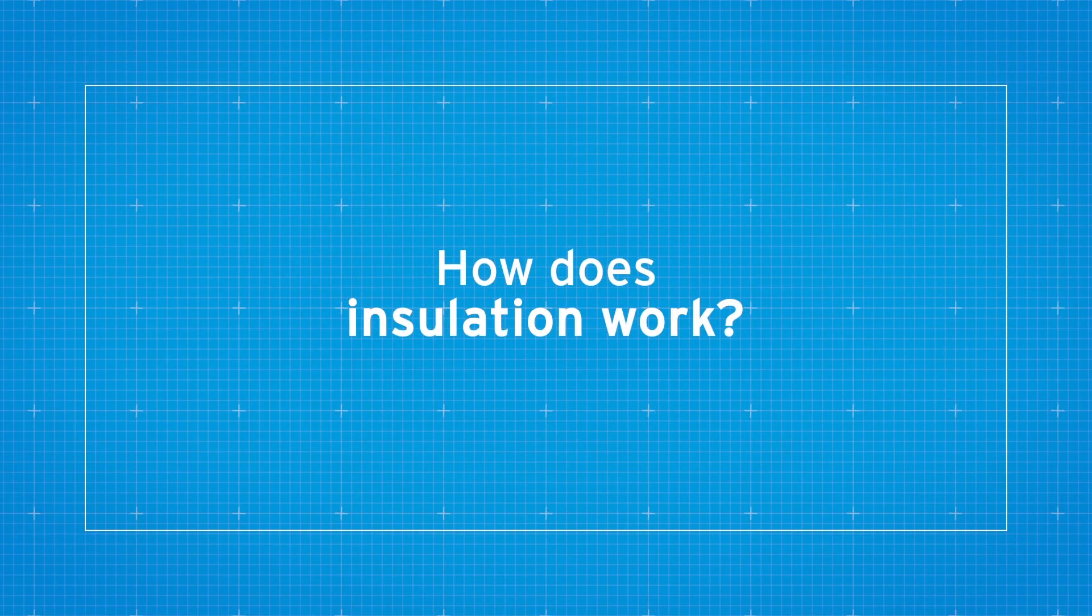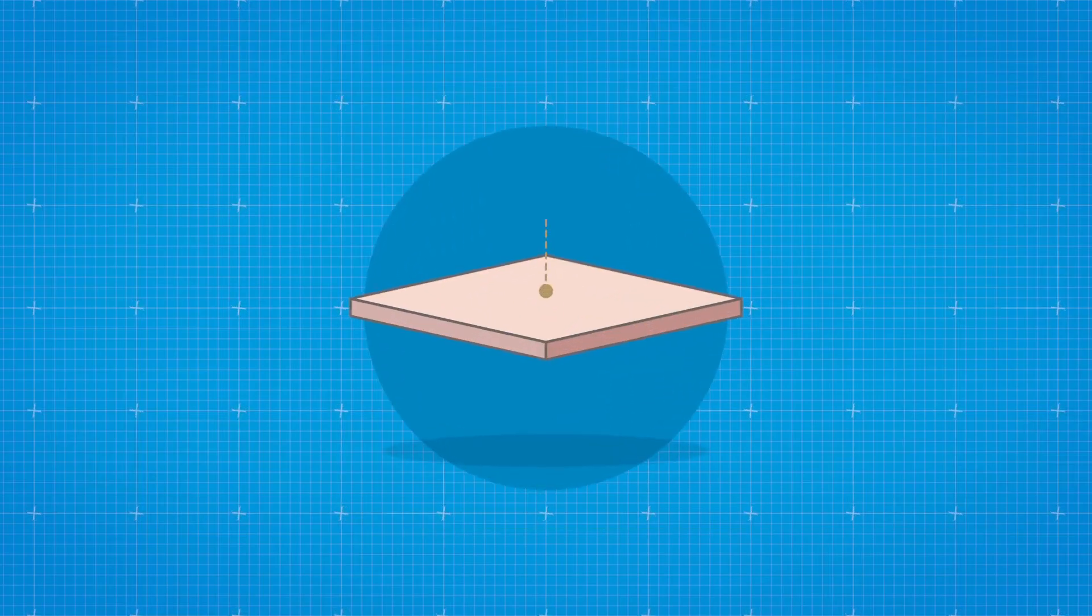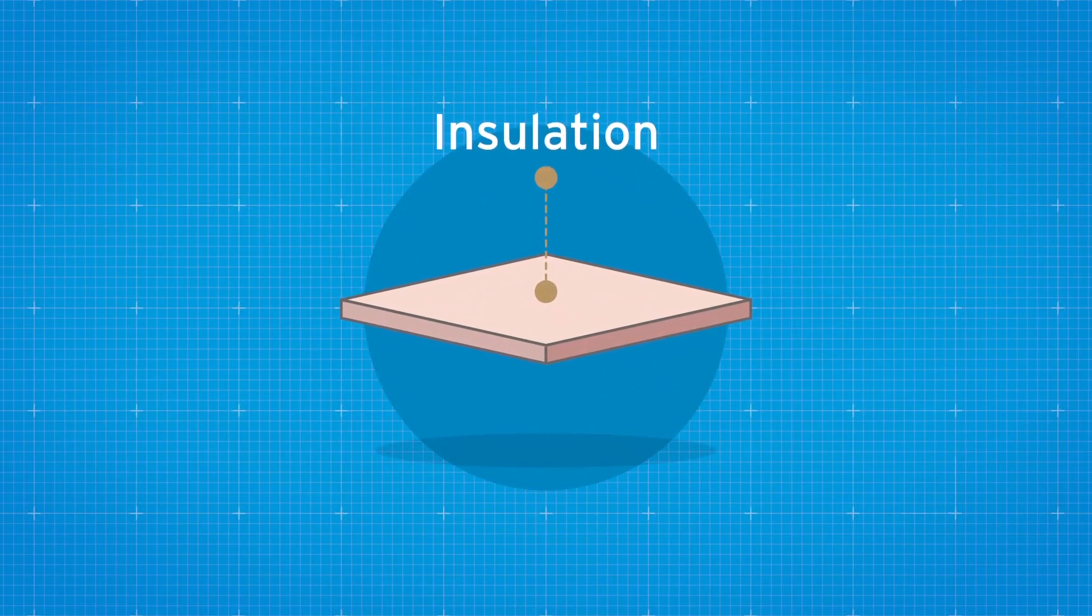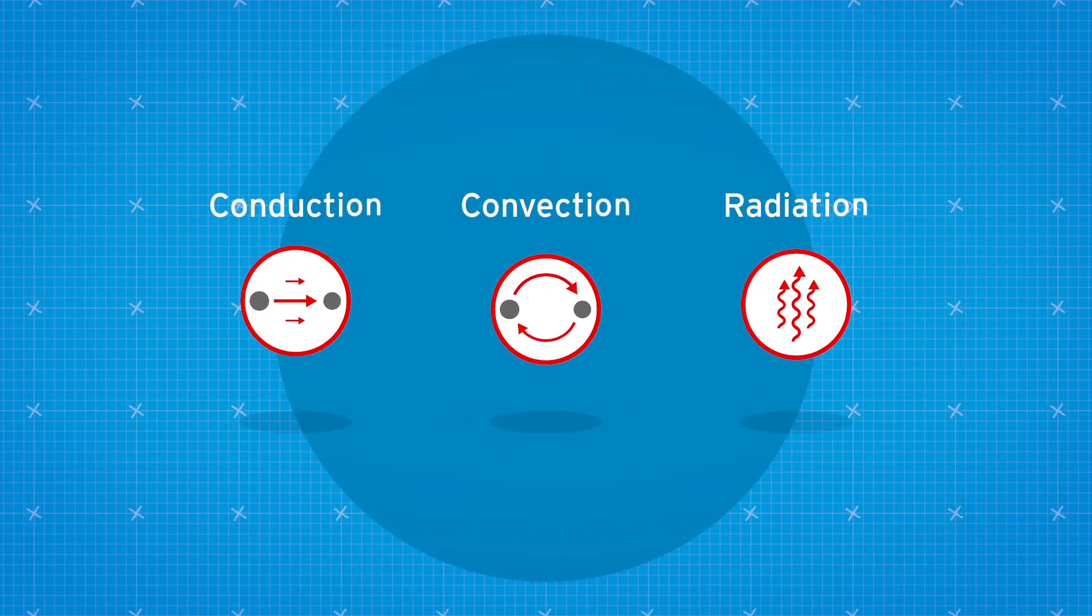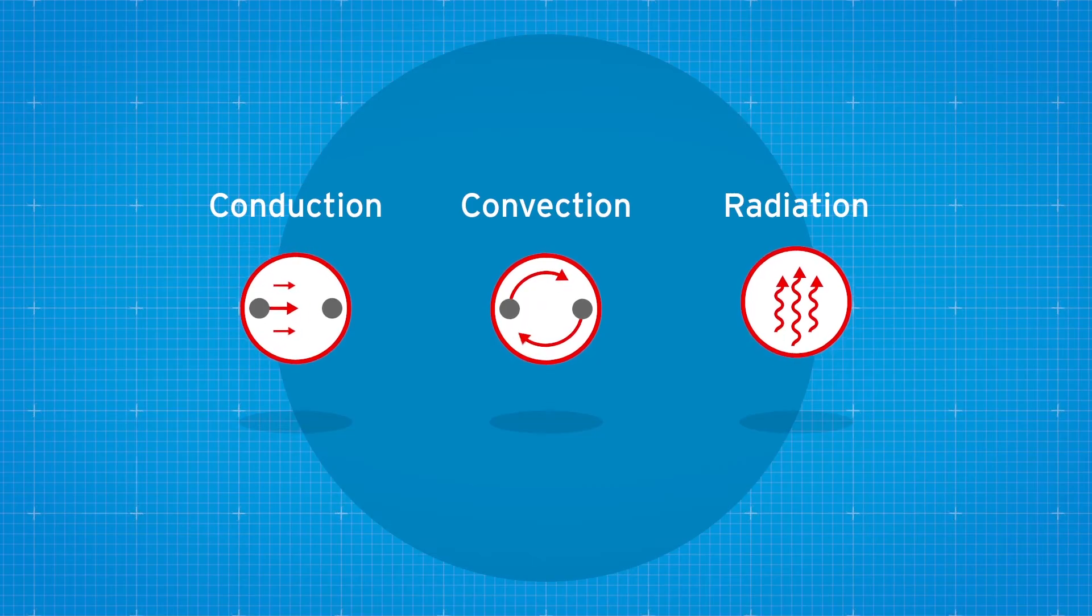How does insulation work? The control of heat flow. Thermal insulation is designed to restrict and resist heat transfer via three mechanisms: conduction, convection, and radiation.